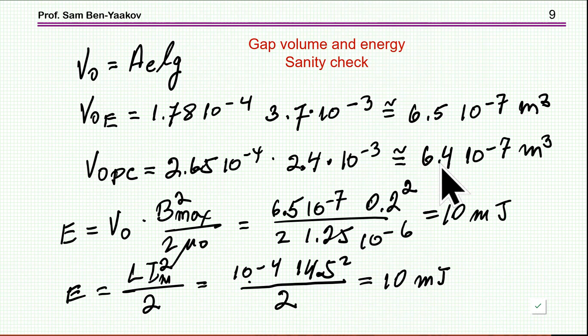Now, the energy, magnetic energy, within the air is B max square over 2μ0, this is the magnetic energy density, times the volume is the energy. Now, we have same B max for the two cores. Of course, same energy, because this is the L and I square, and therefore, we would expect that this would be exactly the same volume for the two cases. Now, since the cross area section of the E core is smaller, then the air gap length is going to be larger, as we have found.